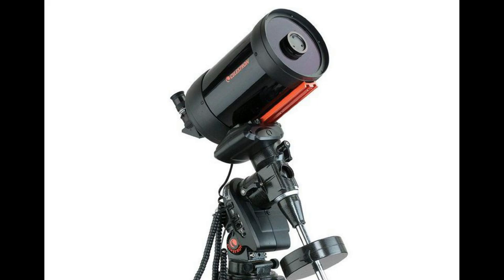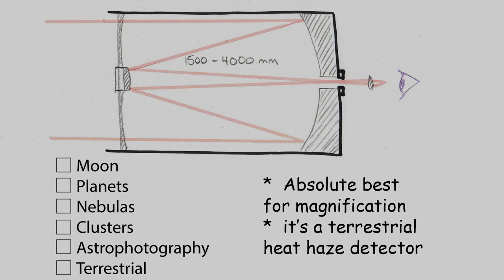These SCTs have super long focal lengths, say between 1500 and as much as 4000 mm, which makes them supreme at magnifying. If you need a close look, get a Cassegrain.